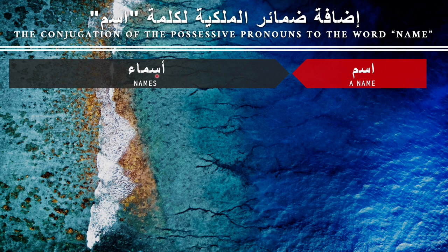For 'asma,' which is the plural format of 'name,' we are actually ending with hamza, so that means it is most likely feminine — and in this case it's true. 'Ism,' the singular format of 'name,' is masculine, while 'asma,' the plural format, is feminine. So now let's move on to the conjugation of the possessive pronouns to each of them. The possessive pronouns are consistent across nouns; you just need to know how to add each pronoun to the word.